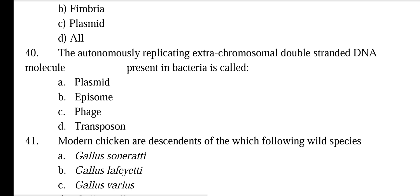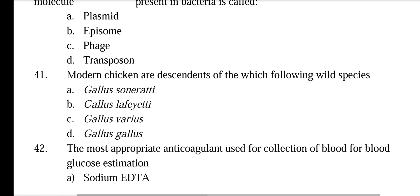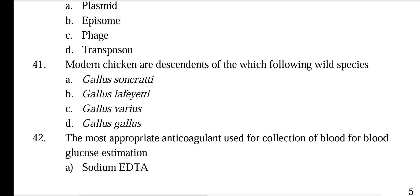Question 41: Modern chickens are descendants of which of the following wild species? Options: Gallus sonneratii and various Gallus species. Modern chickens are descendants of Gallus sonneratii.